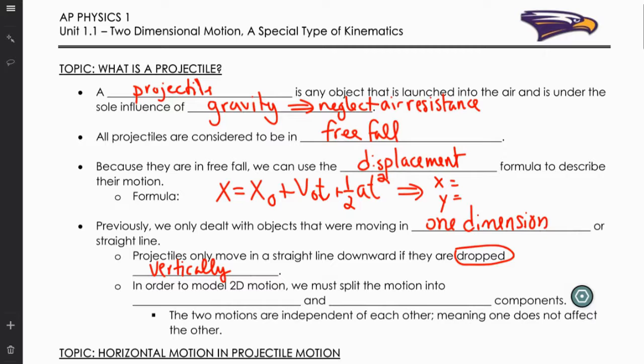We did do free fall in one dimension—those were technically projectiles as well. Now in order to model 2D motion, we're going to split it. The motion has two independent motions: a horizontal motion and a vertical motion. We're calling them components, so it has a horizontal component and a vertical component to its motion.